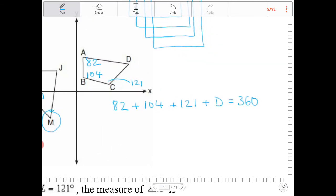So to solve for D, I want to combine like terms on the left-hand side. 82 plus 104 plus 121, that equals 307. And so, let's subtract 307 from both sides, we'll end up with D is equal to 53 degrees.